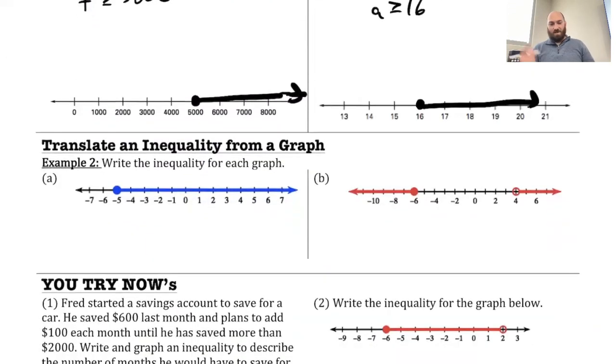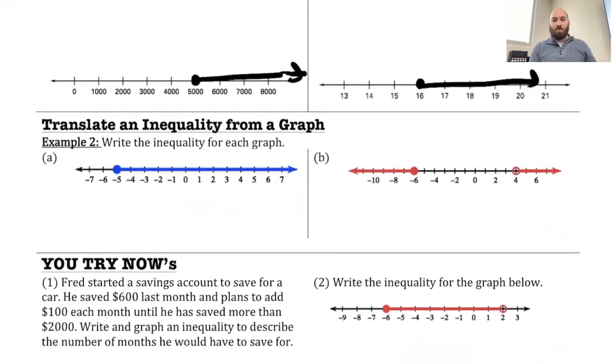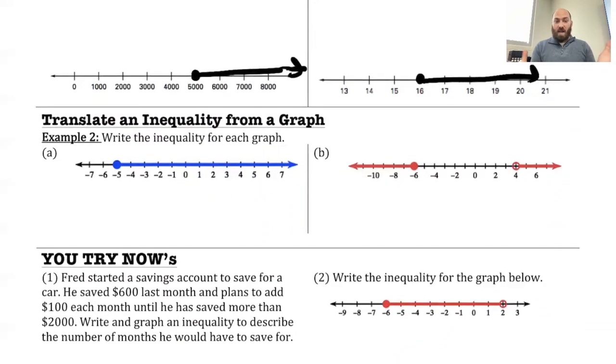The other thing we might do is look at an inequality and just have to write it backwards and write the inequality that represents this. So here we have negative 5 is my key number. Negative 5 is my key number. We see it's a closed circle and we're going off to the right. So we know that's a greater than. The closed circle is going to be greater than or equal to. So I'll just pick whatever variable I want. I'll just say x greater than or equal to negative 5.